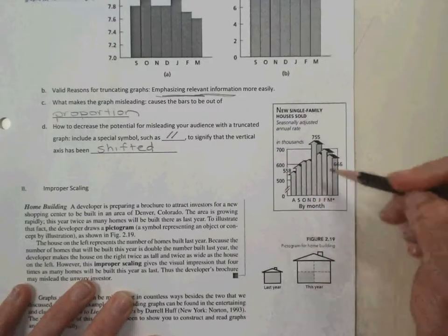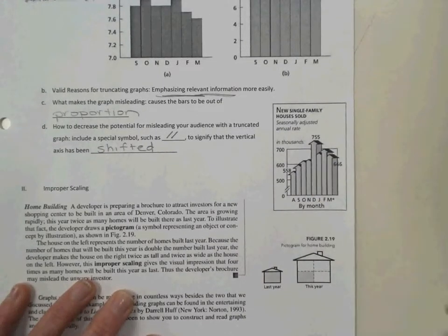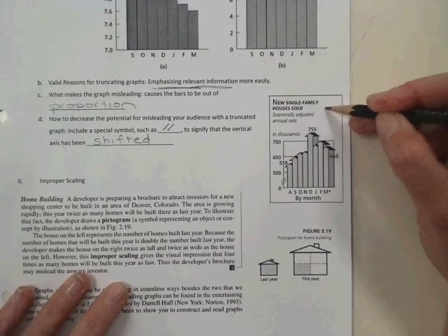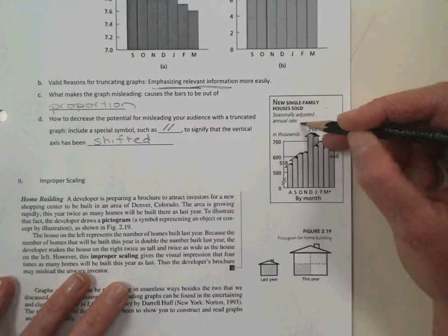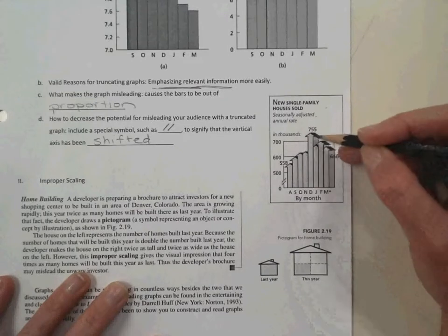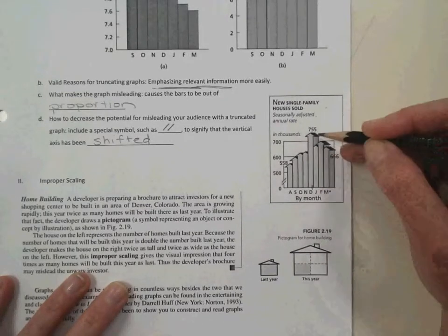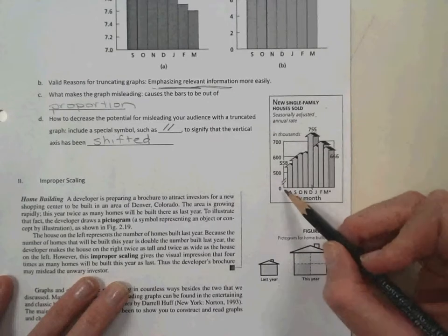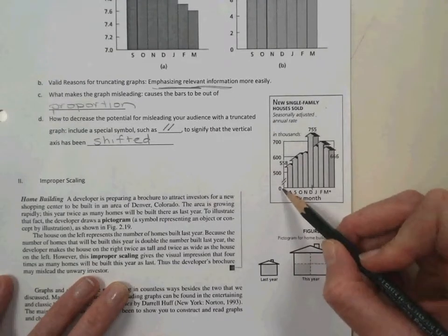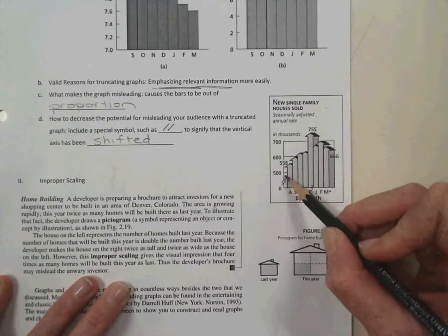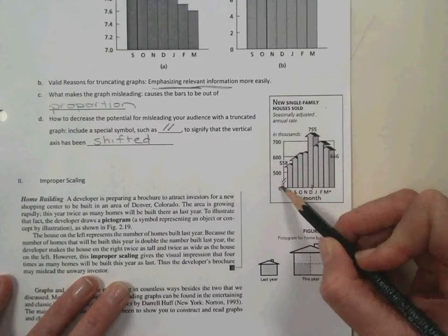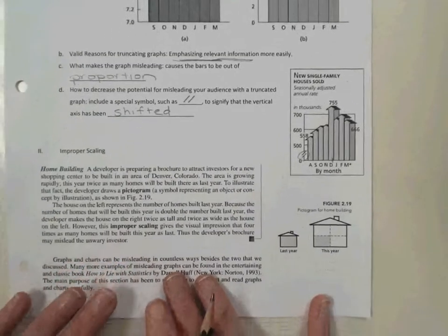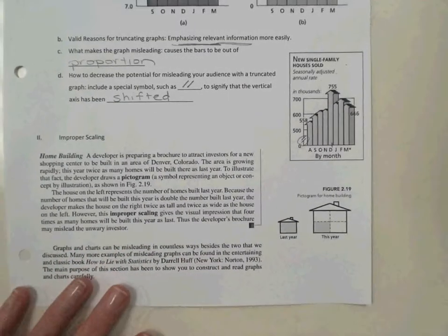And you can see that in the example over here to the right. The new single family houses sold and seasonally adjusted annual rates. You can kind of see how those rates get adjusted. In December, the rates go up significantly. But the key to this graph that we're looking at right now is the fact that they included those parallel lines to indicate, oh, we jumped from zero to 500. And then it's valid to shift the origin like that.